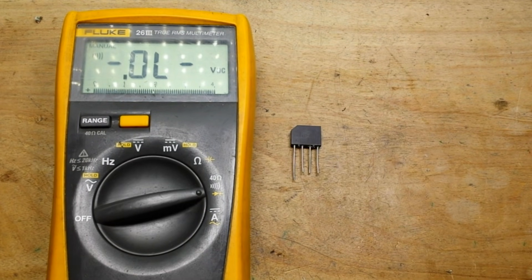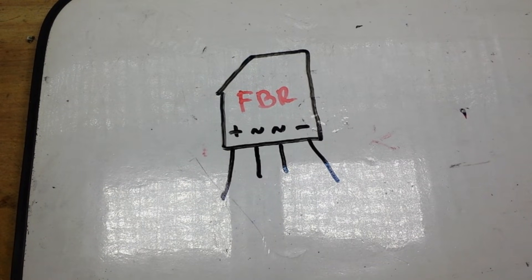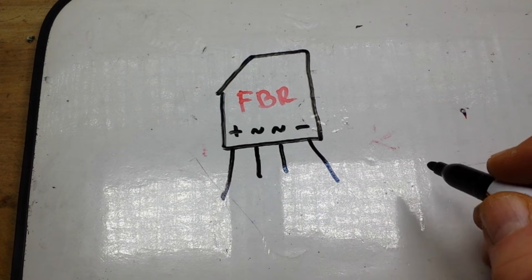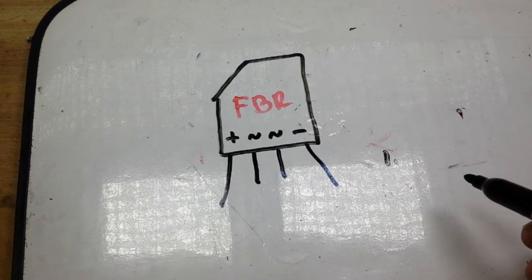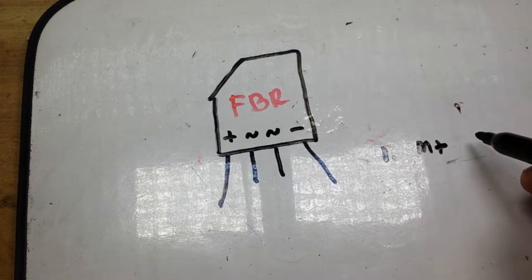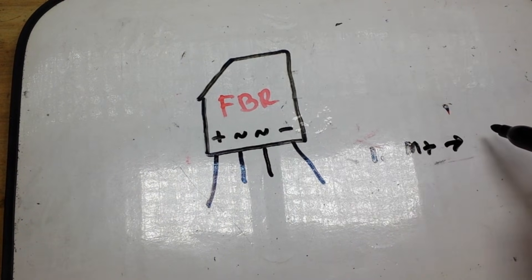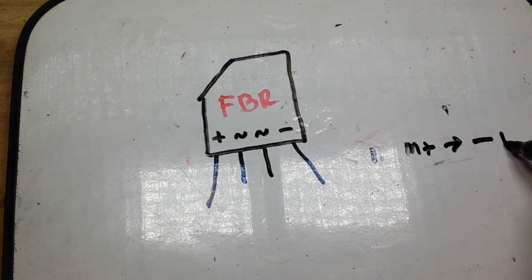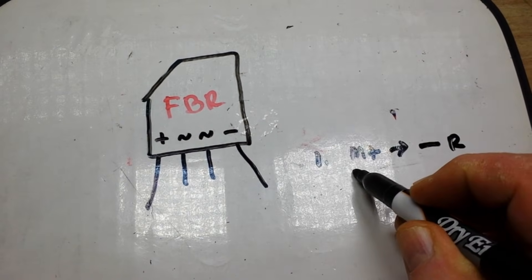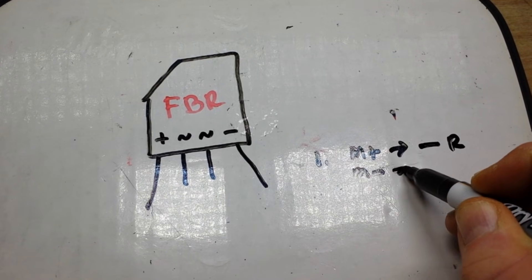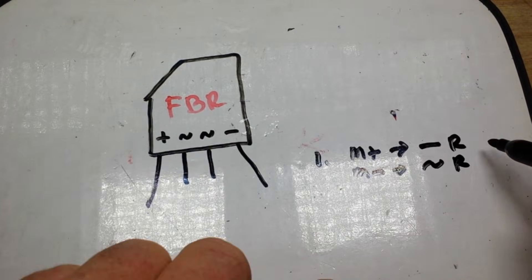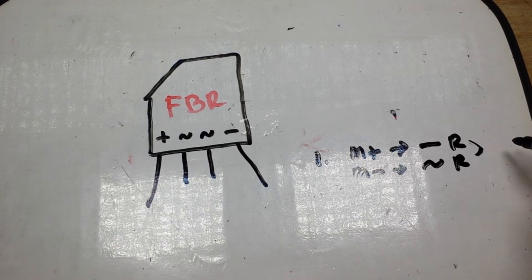Let me show you here on the diagram just so you're clear. Step one is you're going to connect your meter positive to the negative on the rectifier. Then you're going to connect meter negative to the AC that's closest to the rectifier, and then you should get your drop.